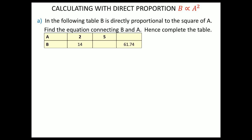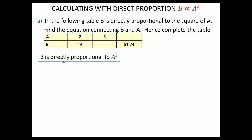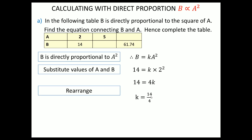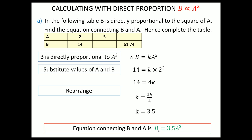Here's a harder example: b is directly proportional to the square of a. Find the equation connecting b and a and complete the table. It's slightly different in that we still have the b = k × something relationship, but because b is proportional to a squared, it's b = ka². We substitute our known values: 14 = k × 2², and since 2² = 4, we rearrange to get k = 14 ÷ 4 = 3.5.